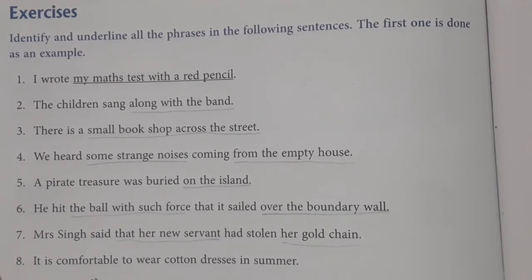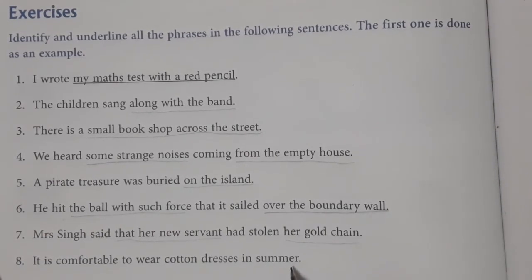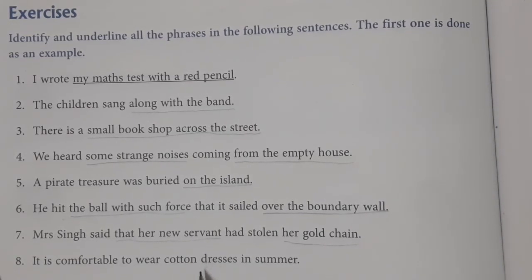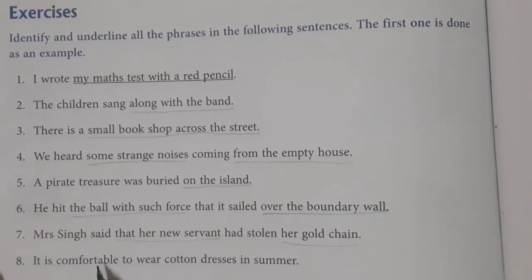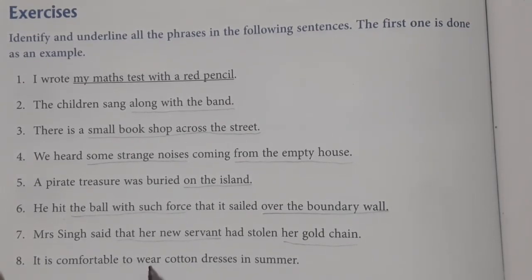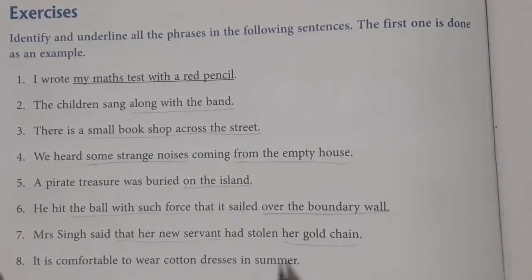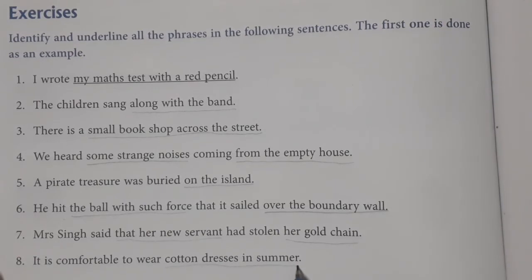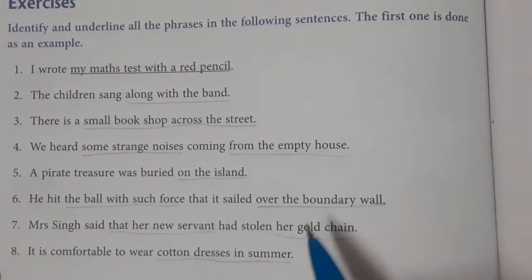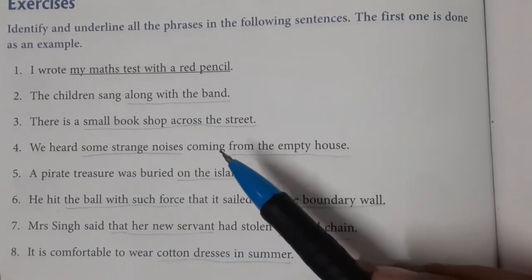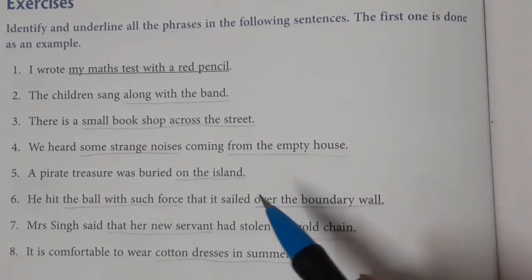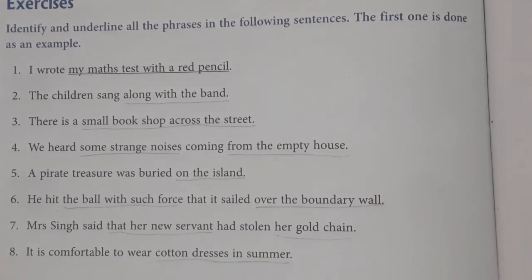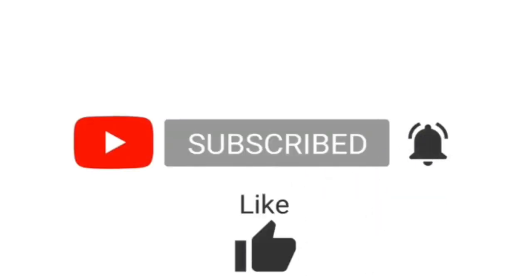The eighth sentence is: 'It is comfortable to wear cotton dresses in summer.' Here the verb is 'wear,' and after identifying it, 'cotton dresses in summer' is the phrase. We have now completed all 8 sentences of this exercise. We will continue with the next part in the next video.